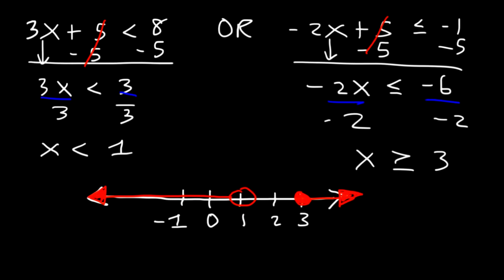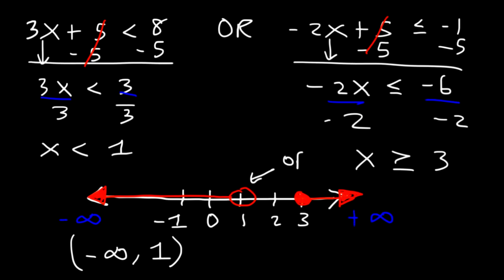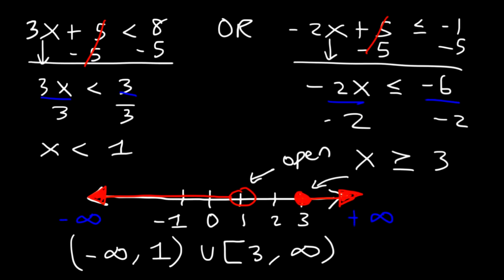Now how can we write the answer using interval notation? All the way to the left is negative infinity and all the way to the right is positive infinity. The first part goes from negative infinity to 1 — since we have an open circle at 1, use parentheses, not brackets. At 3, which is included as a closed circle, use a bracket. So the answer is negative infinity to 1 with a parenthesis, union bracket 3 to infinity. x can be anything from negative infinity up to but not including 1, or anything from 3 onwards including 3.